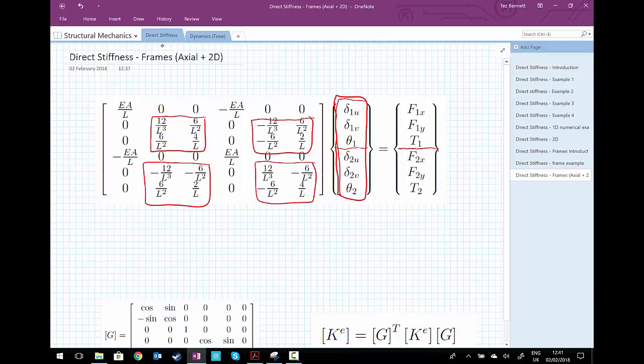But we've added to that the axial effects, EA over L, 1, minus 1, minus 1, 1. We've added this into the matrix. So EA over L, minus EA over L, minus EA over L, EA over L. And now we can consider both x and y displacement or displacements along the bar and transverse to the bar all with this matrix formulation.